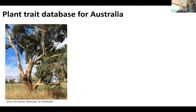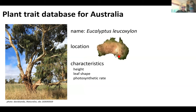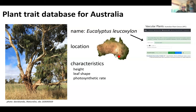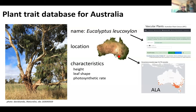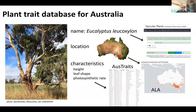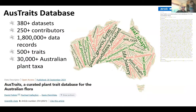Most of my presentation will be about our trait dictionary, but first a brief overview of the database. If you think about any organism — this eucalyptus tree — there are three key pieces of information: it has a name, it occurs in a location, and it has characteristics — traits. For Australia, the resource for plant taxonomy and names is the Australian Plant Census. Location and occurrence data is documented within the ALA — the Atlas of Living Australia — and Austrates compiles the trait data. The database was first publicly released just under two years ago and has continued to grow; we now have more than 380 data sets from more than 250 contributors.